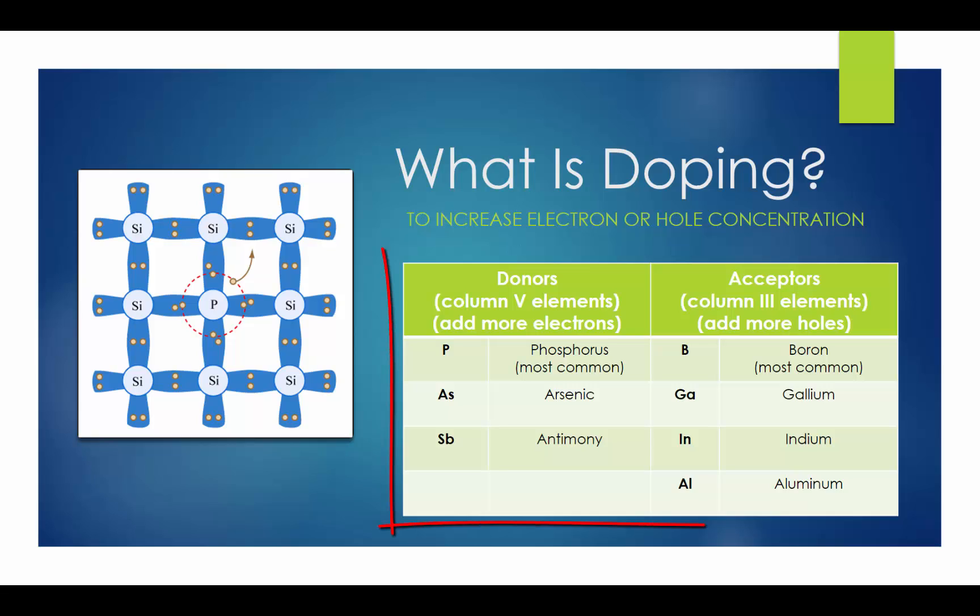The common dopants for silicon are listed in this table. To increase the electron concentration, you can add column 5 elements such as phosphorus, arsenic, or antimony atoms to the silicon crystal. These dopants are called donors since they are adding more electrons. Phosphorus is most commonly used.